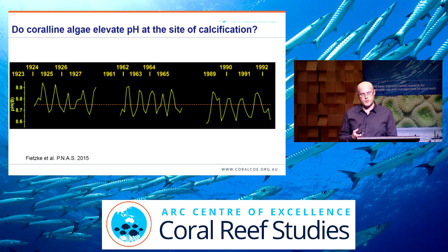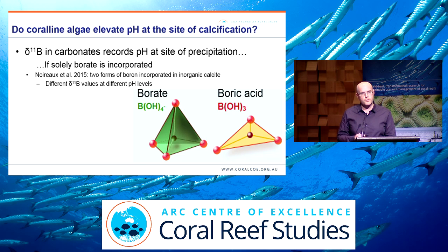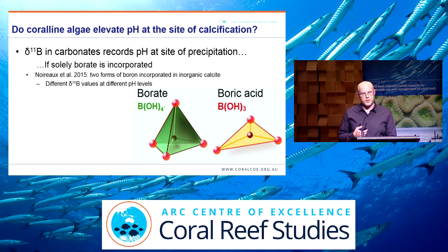Unfortunately, there's another problem for coralline algae: boron isotope values (δ11B) in carbonates record pH at the site of precipitation, but only if solely borate is incorporated. There are two forms of boron — borate and boric acid. Borate is what's incorporated into aragonitic corals, whereas boric acid is not. A few months ago, a paper was published demonstrating that both forms of boron are actually incorporated into inorganic calcite, which is problematic because both types have different boron isotope values at different pH levels.